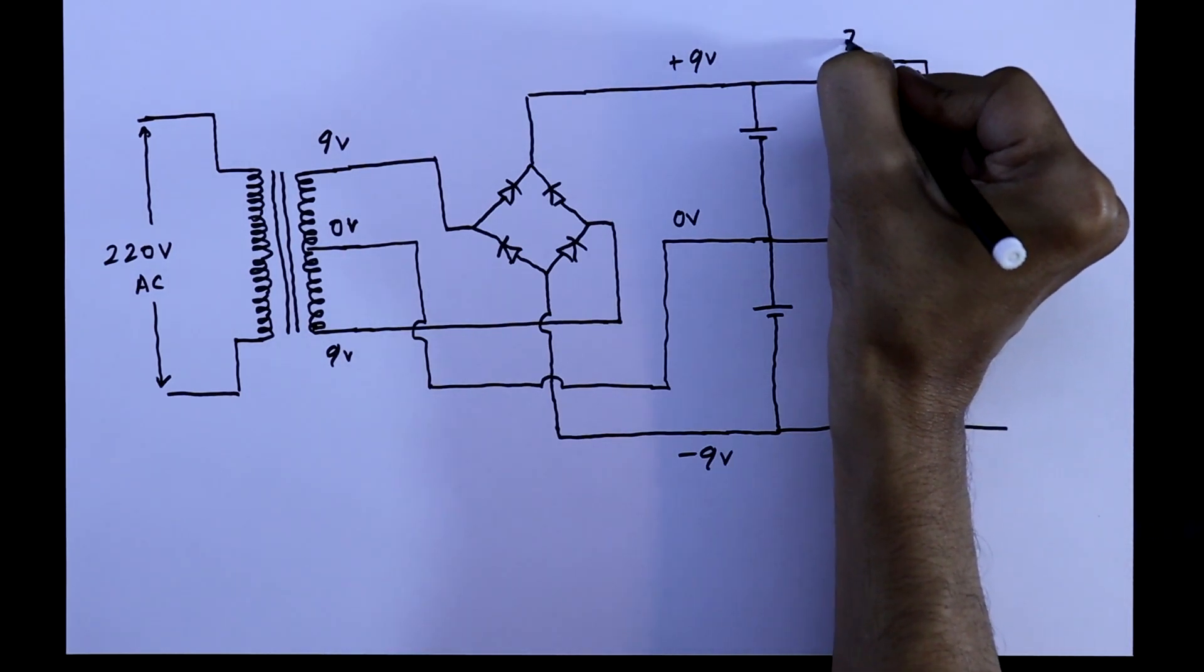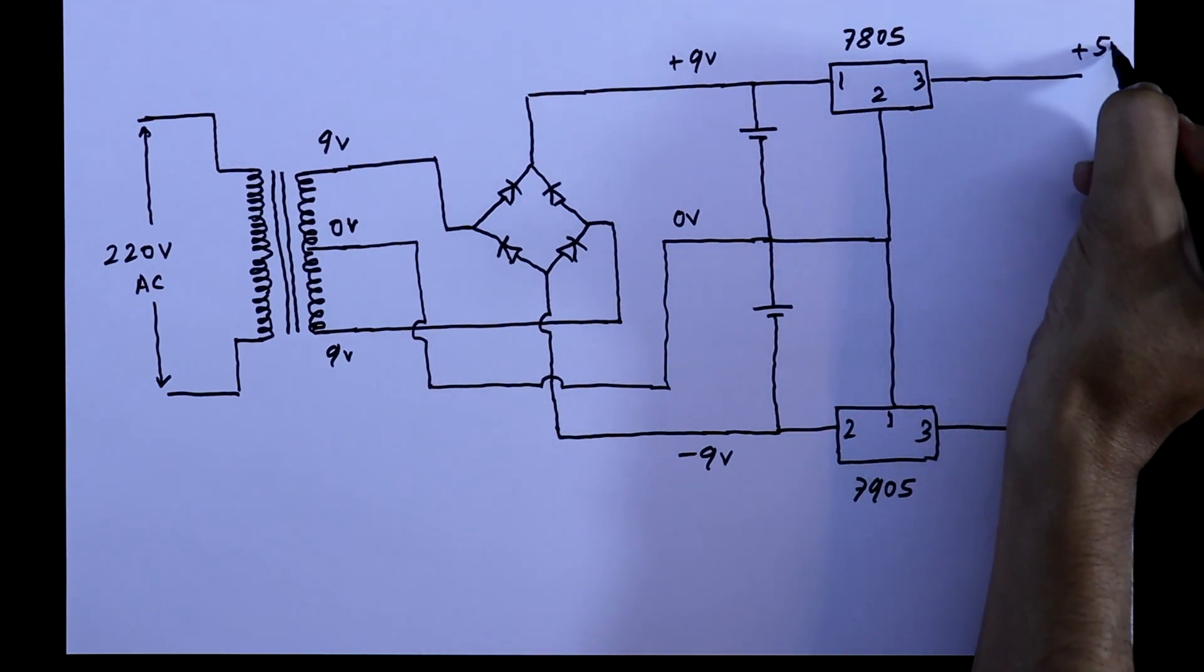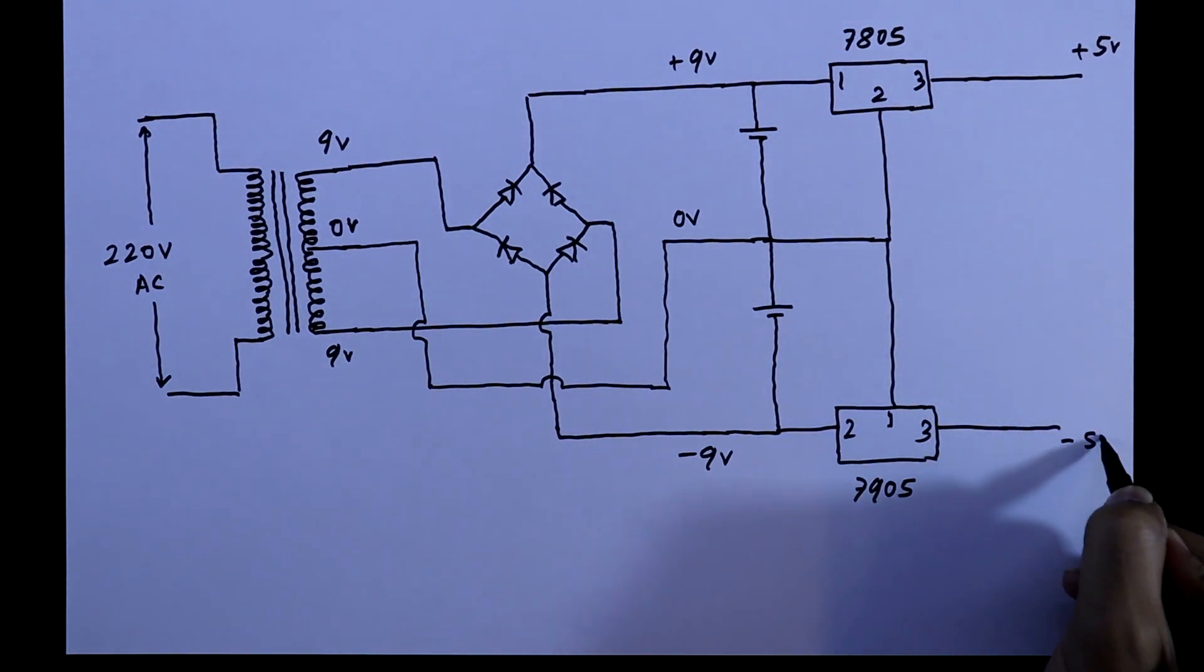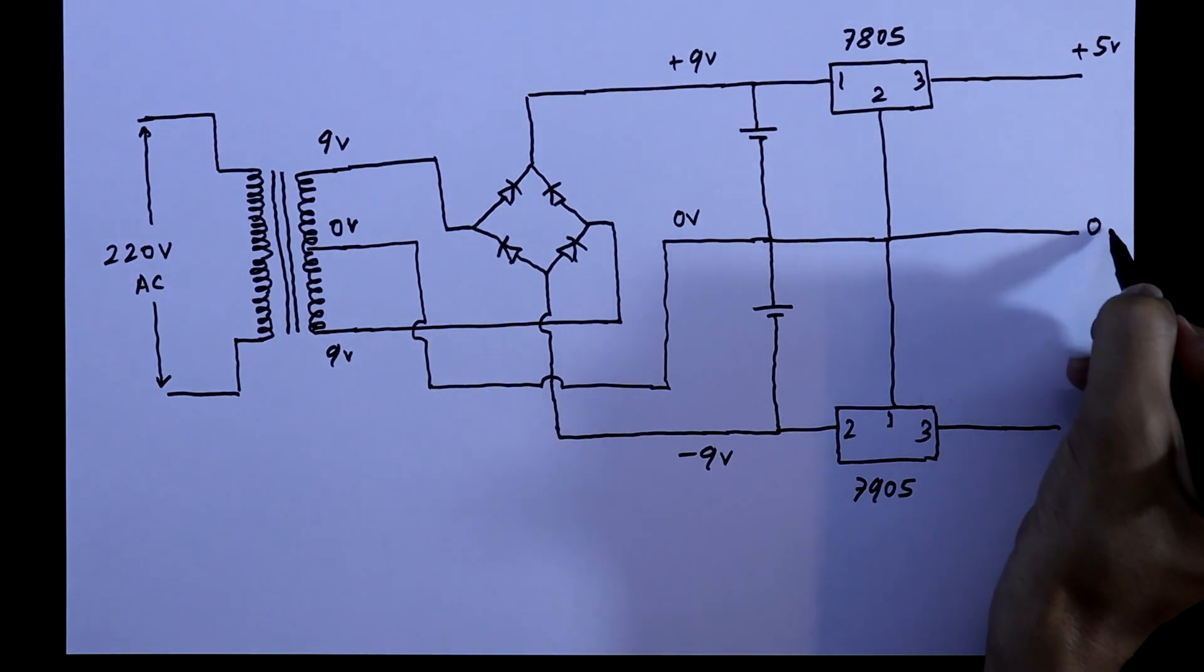It is 7805, plus 5 volt. Minus 5 volt. It is 0 volt.